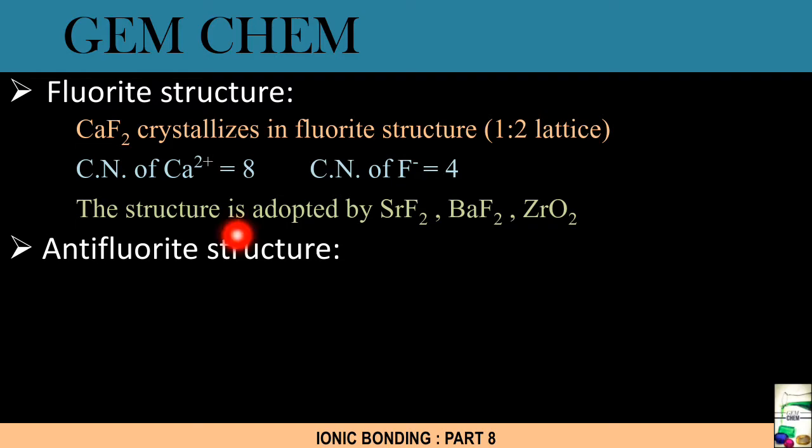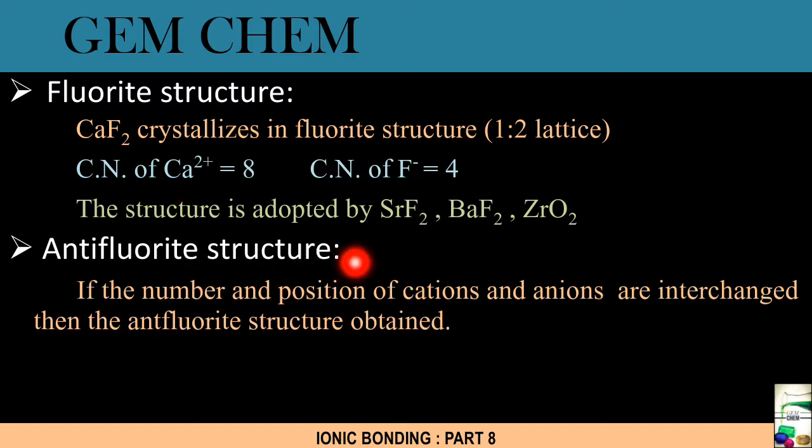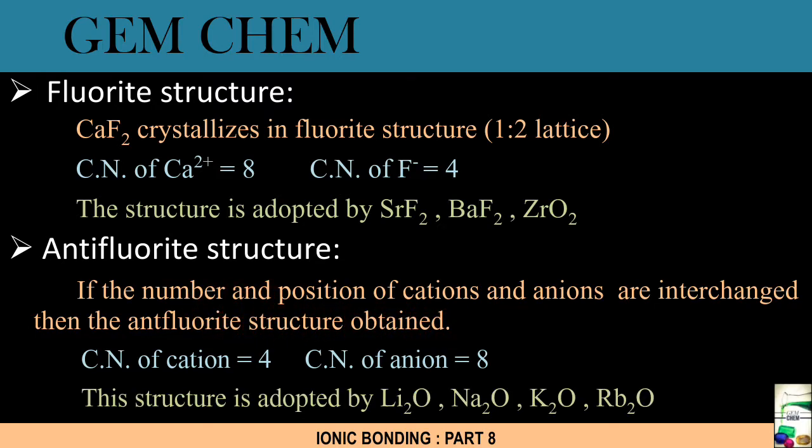In anti-fluorite structure, this is another lattice. The case is just the opposite as that of the fluorite structure. Here there is more number of cations and less number of anions, as a result of which coordination number of cations is much lesser than coordination number of anions. If the number and position of the cations and anions are interchanged, then the anti-fluorite structure is obtained. The coordination number of cation is 4 whereas coordination number of anion is 8. The structure is adapted also by Li2O, Na2O, K2O, and Rb2O. All the oxides generally occupy anti-fluorite structure.